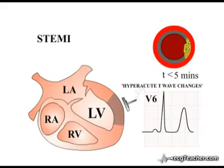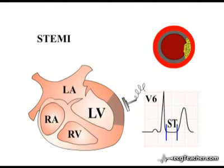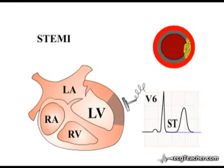In these early stages, hyperacute T wave changes are followed by a very characteristic ECG abnormality in the affected leads. The line on an ECG readout connecting the end of the QRS complex and the T wave is called the ST segment. Normally all myocytes are depolarised at this time and there is no electrical flow in the cardiac muscle, so under normal circumstances the ST segments in all leads are expected to lie on the isoelectric line.